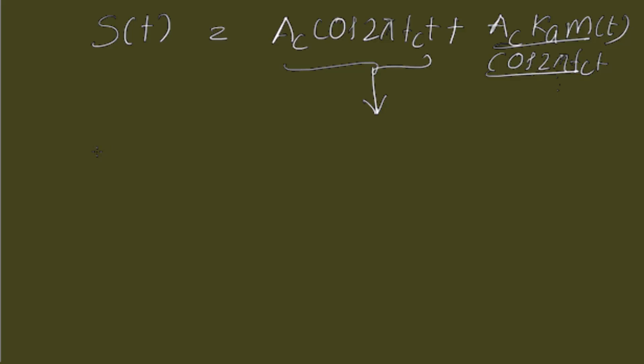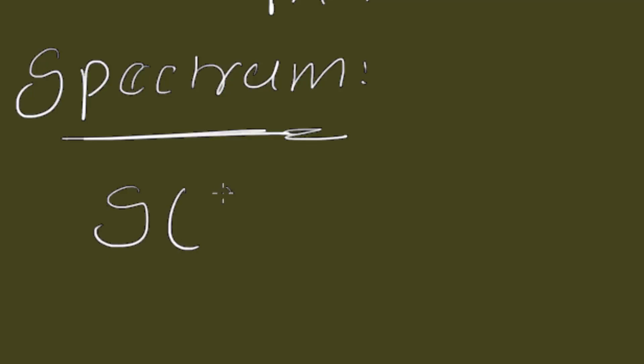Now, this is the AM signal. And we have to consider the spectrum of this AM signal, from which we can get bandwidth and the power required to transmit the AM signal. Now, to draw the spectrum, we have to apply Fourier transform both sides.